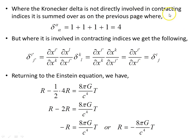Now, where the Kronecker delta is not directly involved in contracting indices, it is summed over, as on a previous page. Where it's not directly involved in contracting indices, it's summed over, and we get this 4 for the four dimensions. In other dimensions, we get whatever that dimension is, and in three dimensions we'd have three here, and so on. But where it's involved in contracting indices, we'll get the following result. We won't get this number result here.